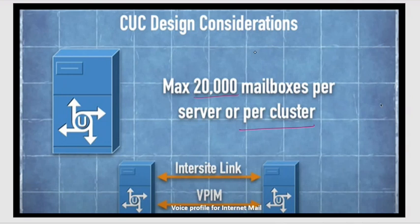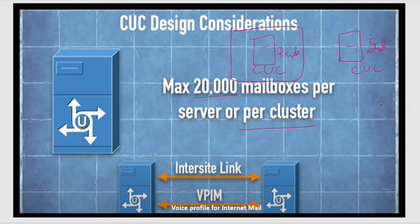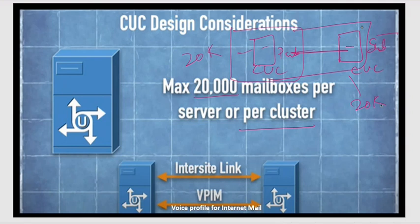The 20,000 mailbox limit is per cluster, not just per server. If you have one publisher and one subscriber — which is the maximum cluster size — the number of users does not double like in CUCM. In CUCM, two servers give 10,000 plus 10,000, totaling 20,000. But in CUC, you still have 20,000 users even with the subscriber added. The subscriber acts as a backup. With one server, you get 20,000 mailboxes and 250 active ports.